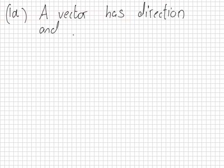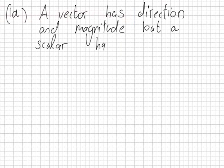A vector has direction and magnitude, but a scalar has only magnitude. So that's one mark.